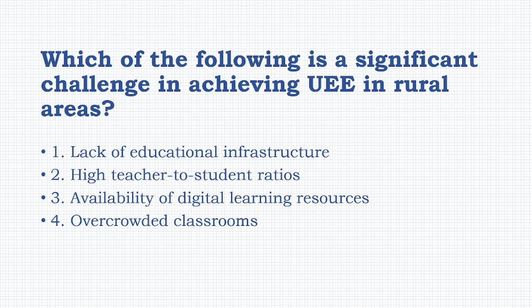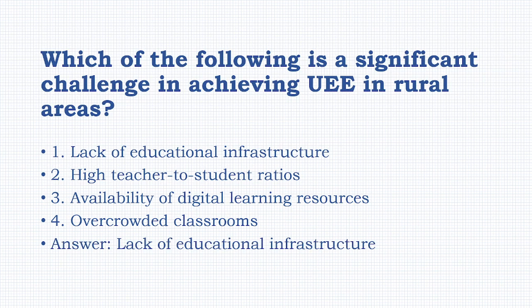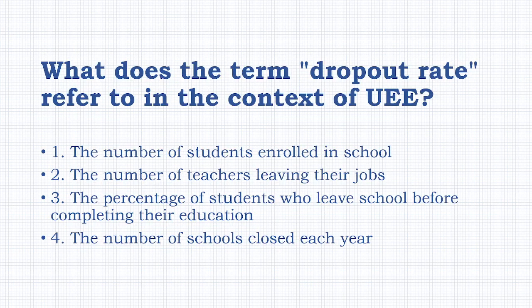Which of the following is a significant challenge in achieving UEE in rural areas? Options: lack of educational infrastructure, high teacher-to-student ratio, availability of digital learning resources, overcrowded classrooms. The answer is option A: lack of educational infrastructure.